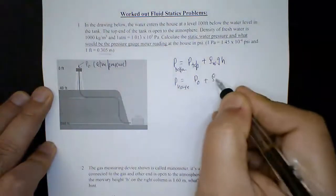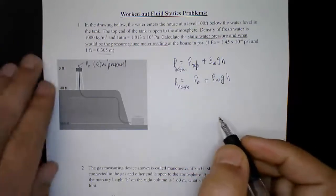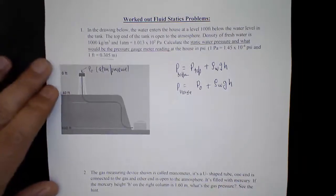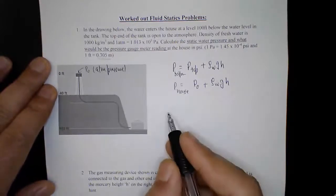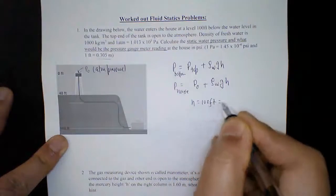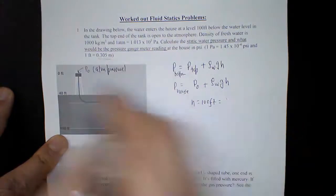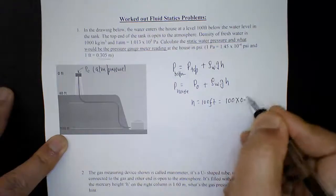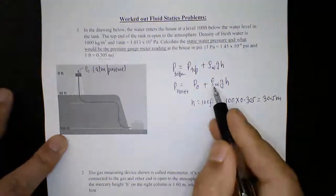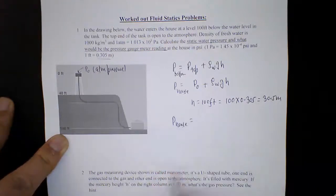Our formula is: pressure at any given depth is pressure at the top plus density times gravity times vertical height. Pressure at the house equals the atmospheric pressure p0 plus the density of water times gravity times height. Make sure you have everything in standard units. The height is 100 feet, and since one foot equals 0.305 meters, that gives us 30.5 meters.